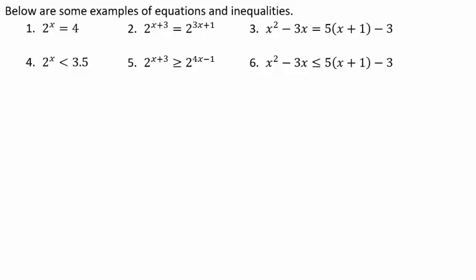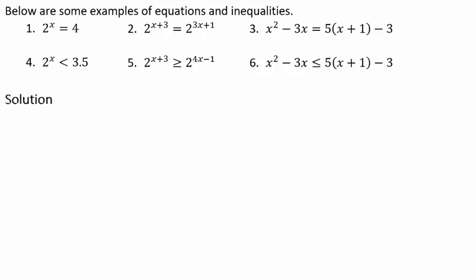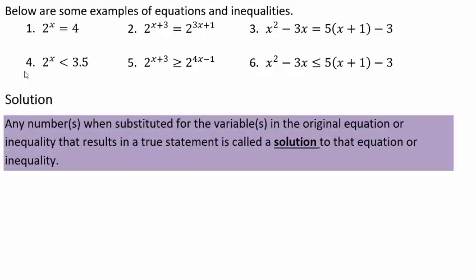Below are some examples of equations and inequalities in one variable. The first one, 2 to the x equals 4, is an exponential equation. 2 to the x less than 3.5 would be an exponential inequality. A solution to an equation or inequality means when you take a real or complex number and plug it back into the original equation, it satisfies the equation — makes it a true statement. For example, x equals 2 is a solution to 2 to the x equals 4 because 2 squared is 4. If I put x equals 0 into the inequality, 2 to the 0 is 1, and 1 is smaller than 3.5, so 0 is a solution.